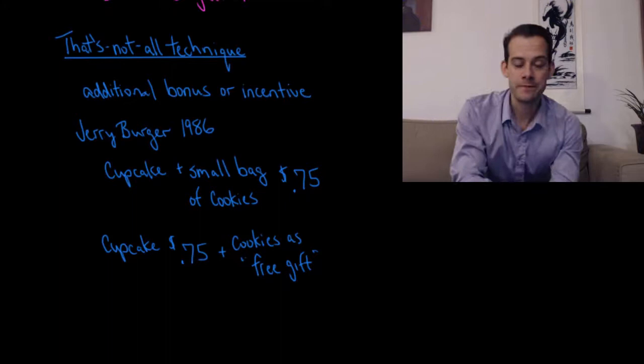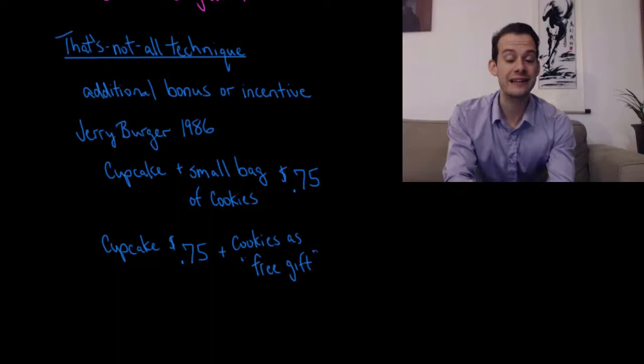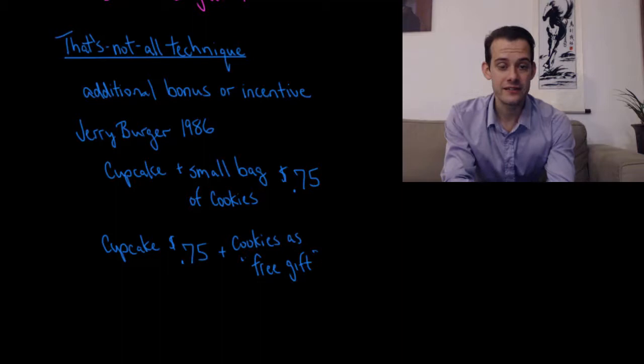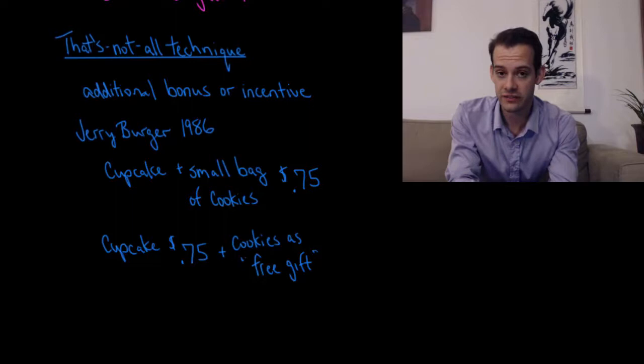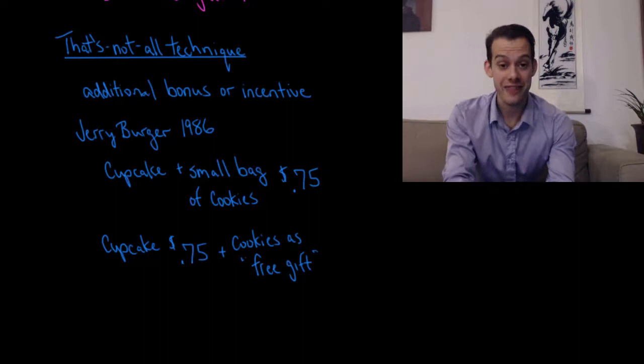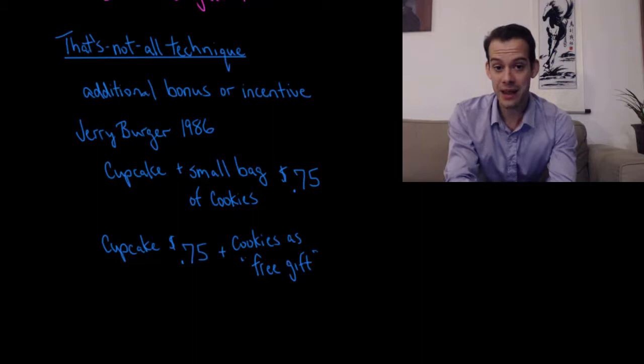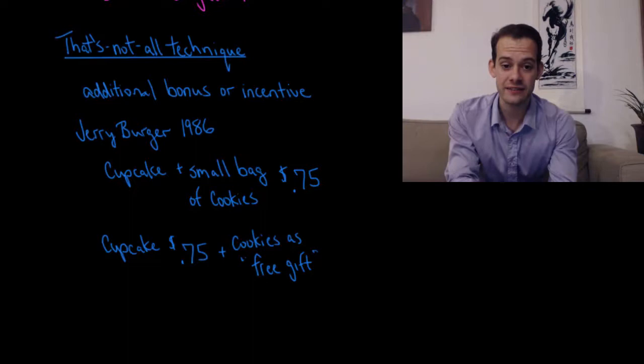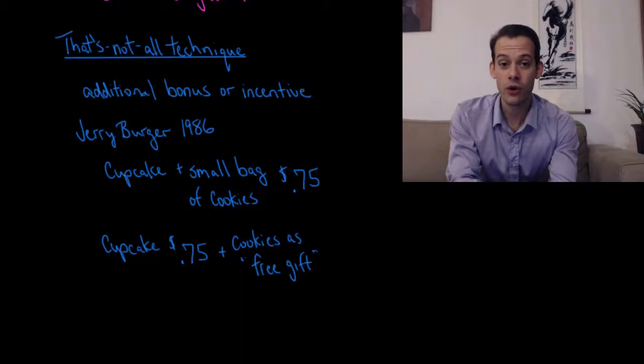We can also see this norm of reciprocity in understanding what's called the that's-not-all technique, and this is where the seller will offer some additional bonus or additional incentive. This was demonstrated by Jerry Berger in 1986 where he looked at two different sales of the same products. He sold a cupcake and a small bag of cookies for 75 cents, and then he sold the same products for the same price but he framed it as an additional bonus. He sold a cupcake for 75 cents but then he threw in a small bag of cookies as a free gift. What he showed was that when he framed things this way, that there was a free gift, an additional incentive, he actually was able to increase sales.